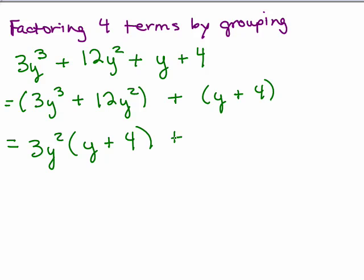Now we're going to look at the second parentheses, and there is no common factor — but there really is a 1. If you want to think of it as having a coefficient, we could put a 1 there. It's not necessary, but you can do that.